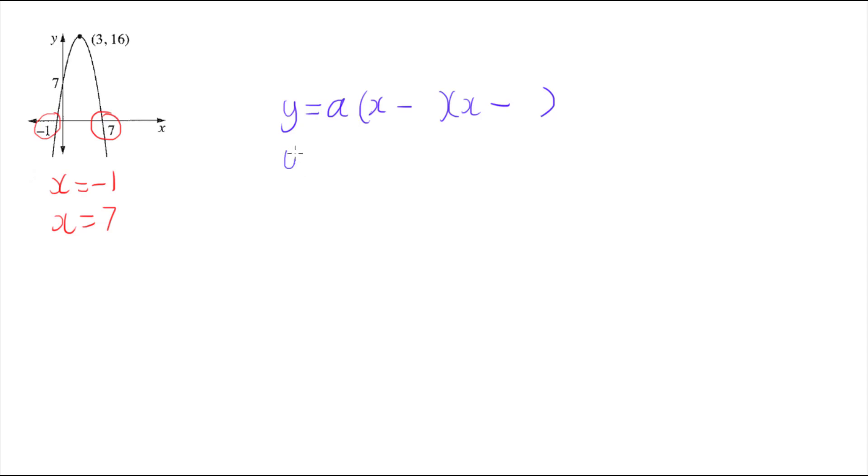But let's put our roots in first. So my equation is going to be a times x minus one of my roots. So I'm going to put in minus negative one times x minus my other root seven. And let's just sort out that double negative there. So that's going to give me y equals my scaling factor times x plus one times x minus seven.